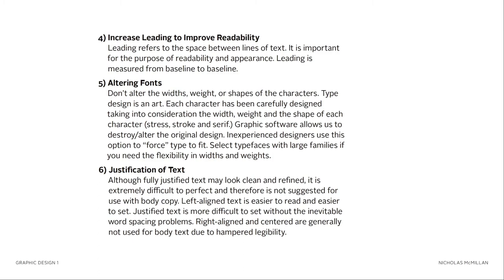Six: justification of text. Although fully justified text may look clean and refined, it is extremely difficult to perfect and therefore is not suggested for use with body copy. Left-aligned text is easier to read and easier to set. Justified text is more difficult to set without the inevitable word-spacing problems. Right-aligned and centered text are generally not used for body copy due to hampered legibility.